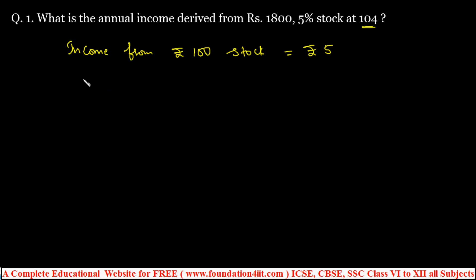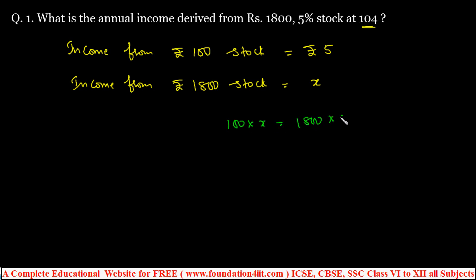For 1800 stock, how much will you get? Using direct variation: 100 × x = 1800 × 5. Just cross multiplication — 100 × x = 5 × 1800. From this, x = 1800 × 5 ÷ 100 = 90. So annual income from 1800 is rupees 90.